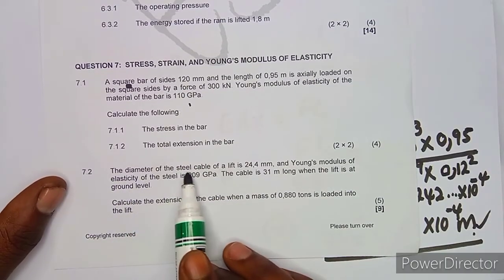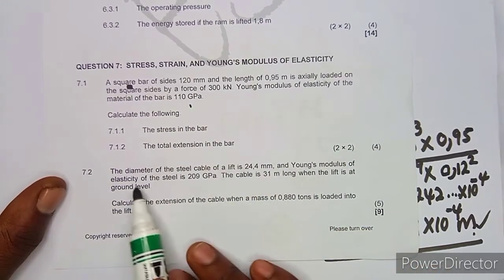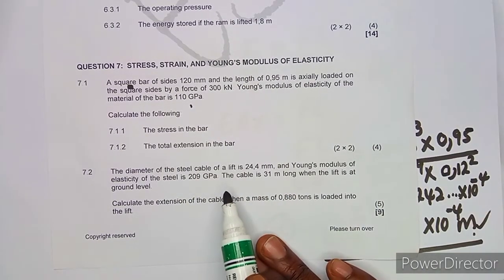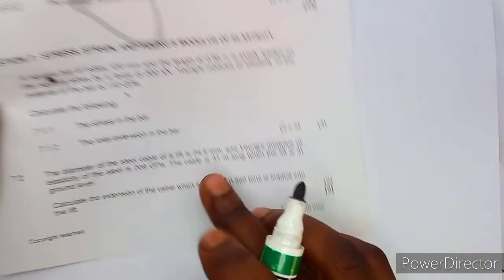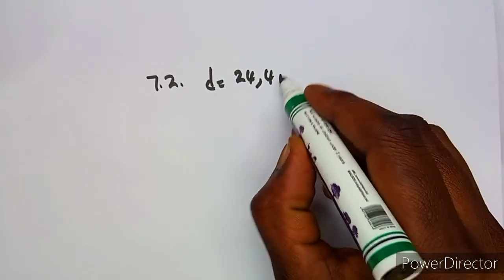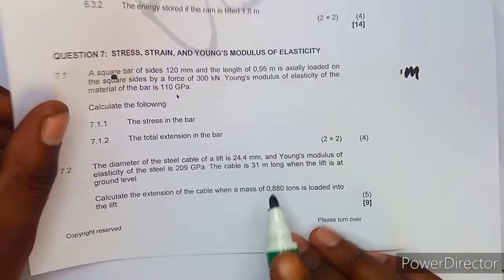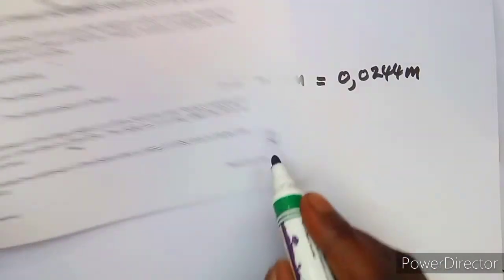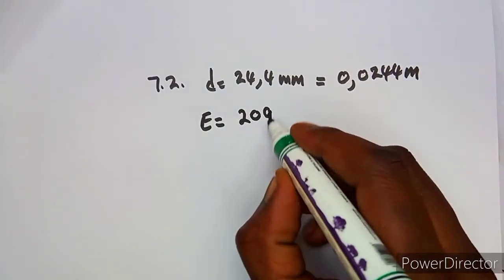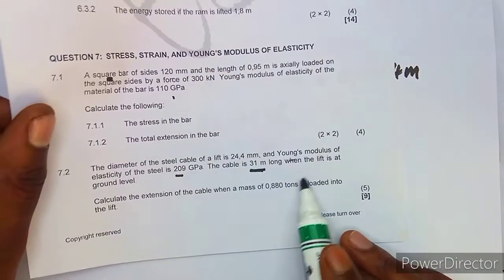Moving to question 7.2: the diameter of a steel cable for a lift is 24.4 millimeters, which in meters is 0.0244 meters. The Young's modulus of elasticity for steel is E = 209 gigapascals. The cable length is 31 meters when the lift is at the ground.